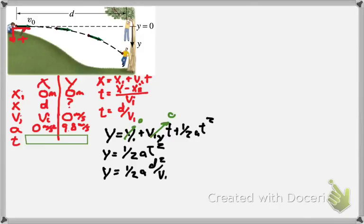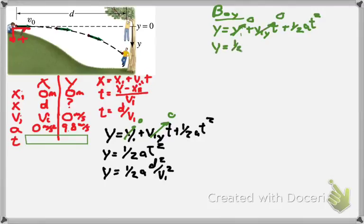Now we're going to talk about our boy dropping. As he drops, his initial position is zero, his initial velocity is zero. So we find y equals 1/2 a t squared.